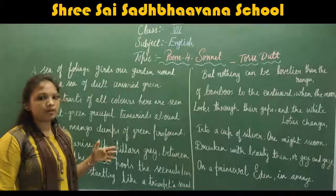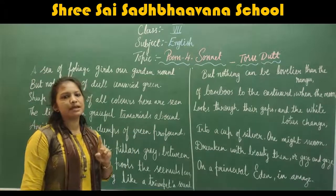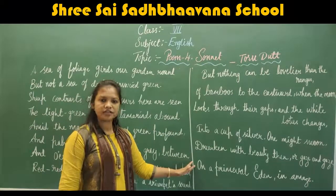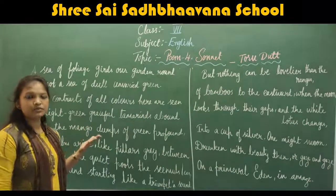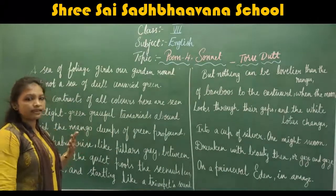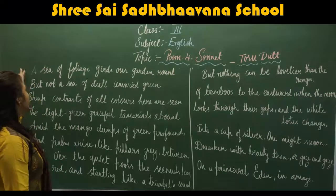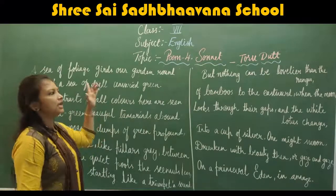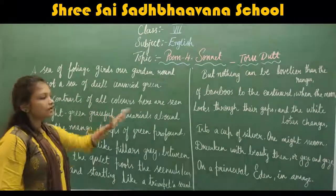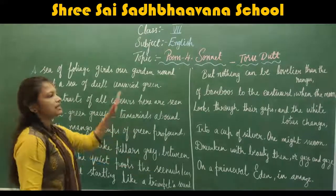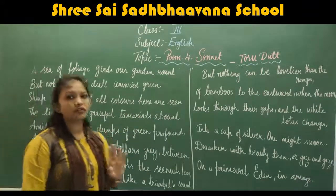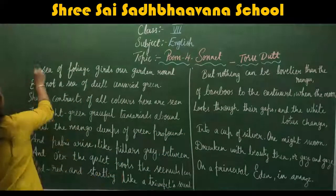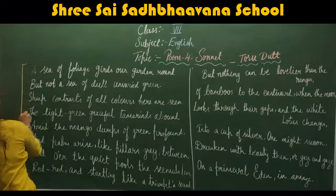A sonnet is a poem which has only one paragraph, a single paragraph, and it includes 14 lines. These 14 lines are divided into groups of four lines each, and the last two lines stand separately — making four, four, four, and two.